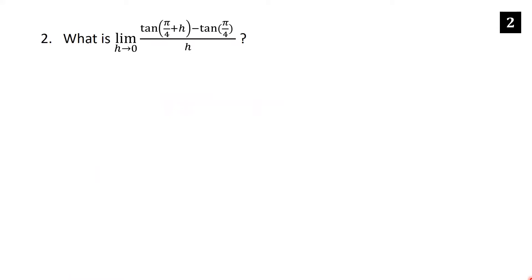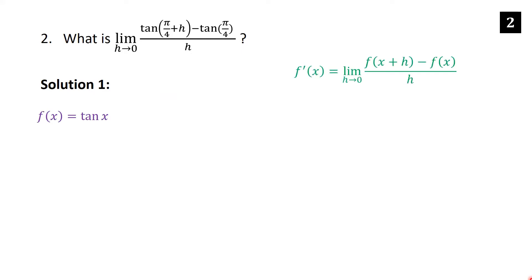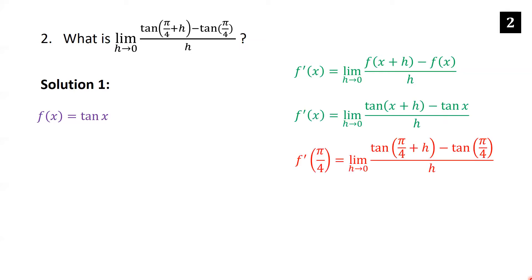Next problem: what is the limit as h goes to 0 of tan(π/4 + h) minus tan(π/4) all over h? We'll show two ways to solve this. First, using the definition of the derivative: if f(x) equals tan(x), then f′(x) is the limit as h goes to 0 of f(x+h) minus f(x) over h.